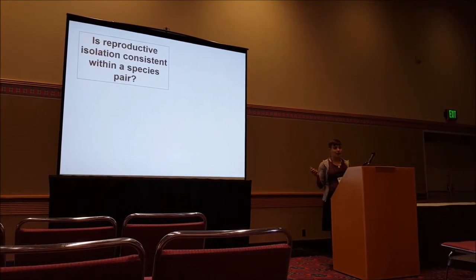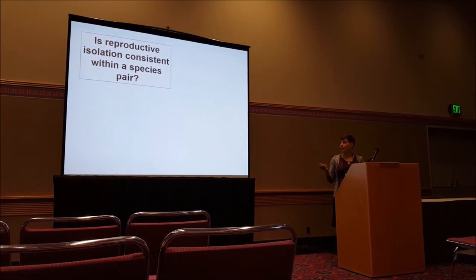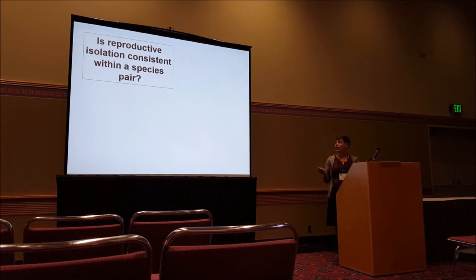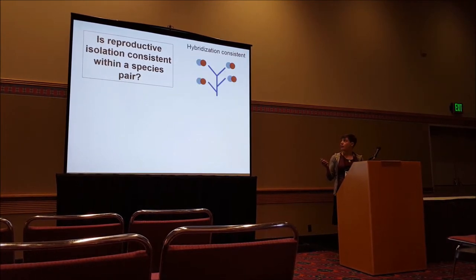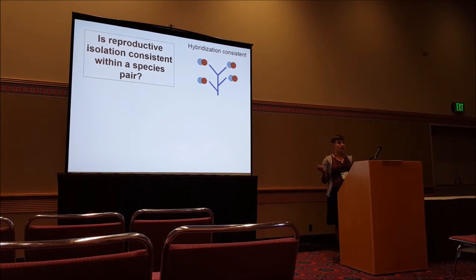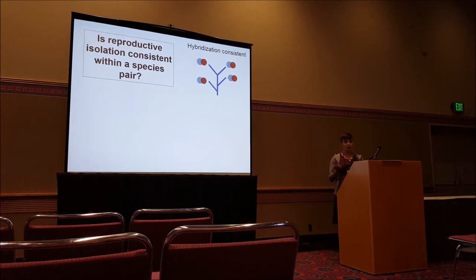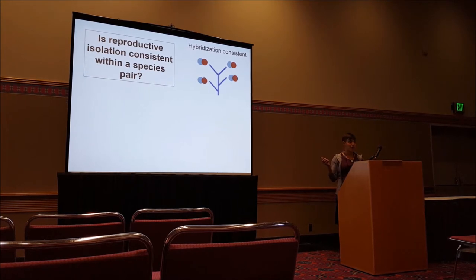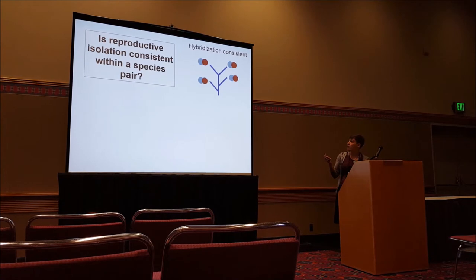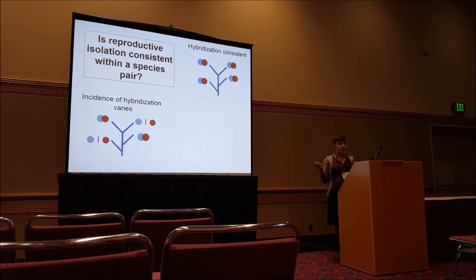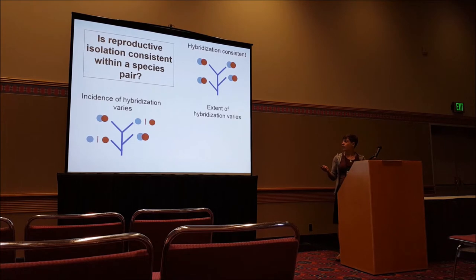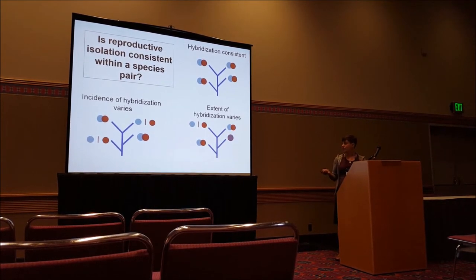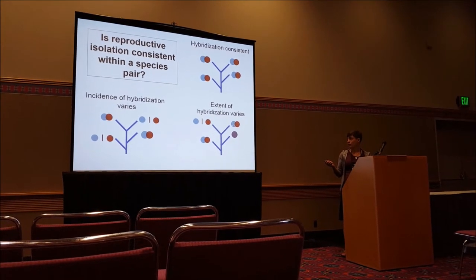We've acknowledged this variation in outcomes that can occur when secondary contact occurs. But one thing that we're still really working on quantifying is how consistent reproductive isolation is across space — across multiple locations where a pair of species meets. We've traditionally thought of reproductive isolation as a species-level thing, where a single basis of reproductive isolation between a pair of species could lead to consistent hybridization across locations. But increasingly we're getting evidence that hybridization can vary. I'd like to set up two different ways we might expect it to vary: one is that the incidence of hybridization can vary — in some tributaries there's hybridization and in some there's not — or the extent of hybridization varies: in some tributaries none, in some a little, in some a lot.